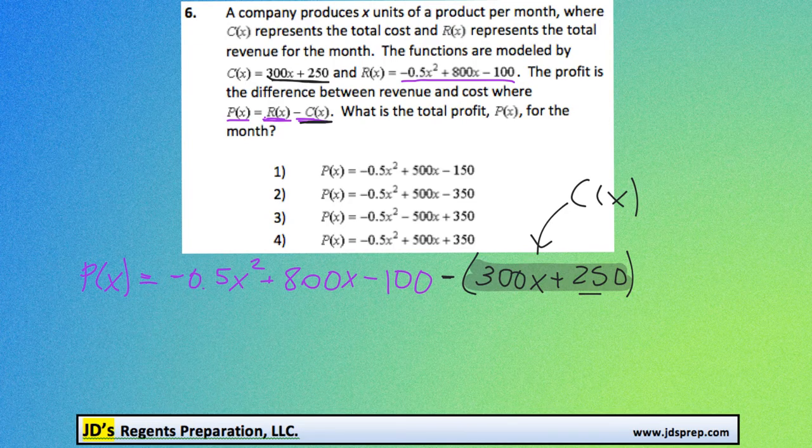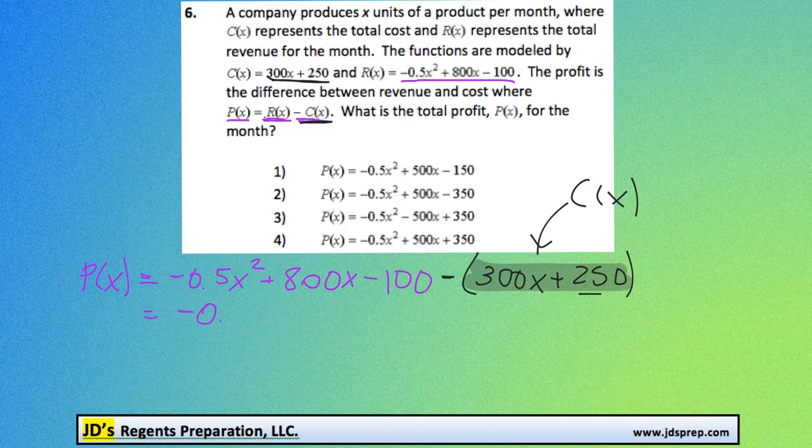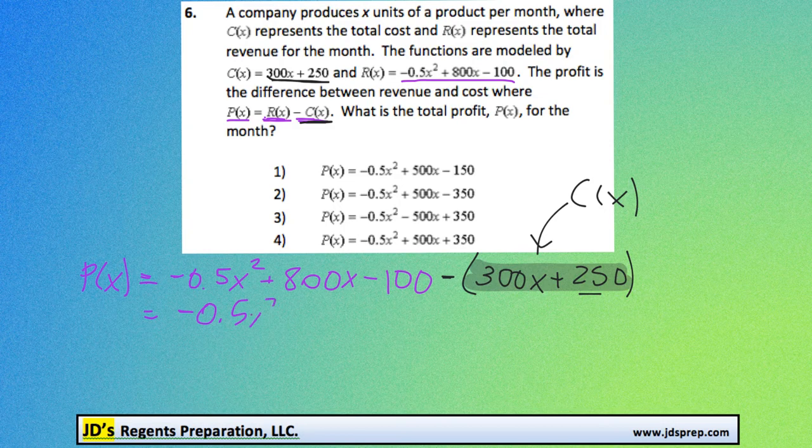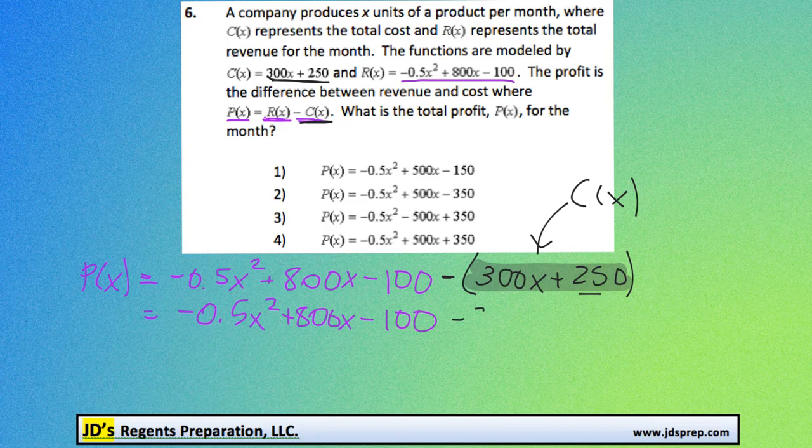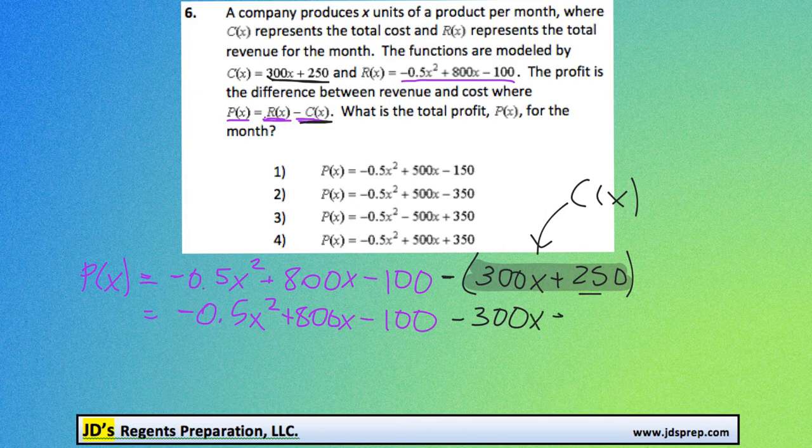So then what we're going to do is I'm going to rewrite this without those brackets, just to make sure we don't make any mistakes. So this will become minus 300x minus 250. That's the really important part there.